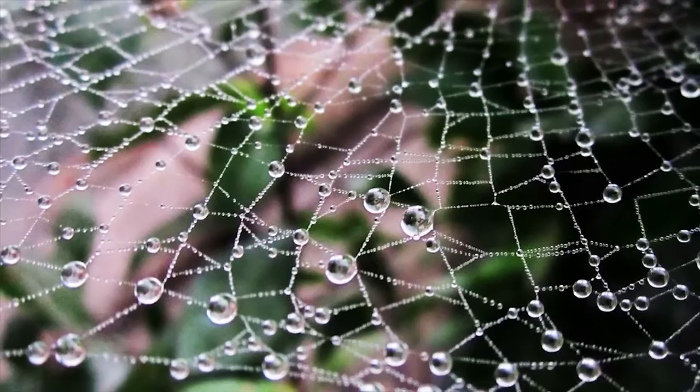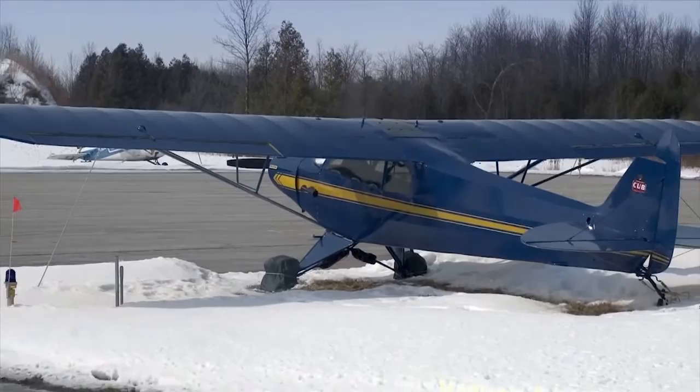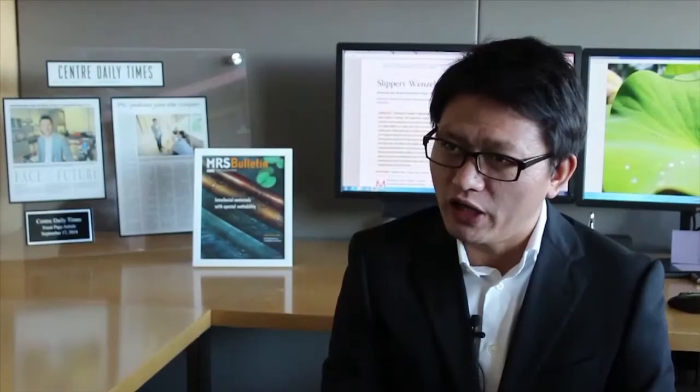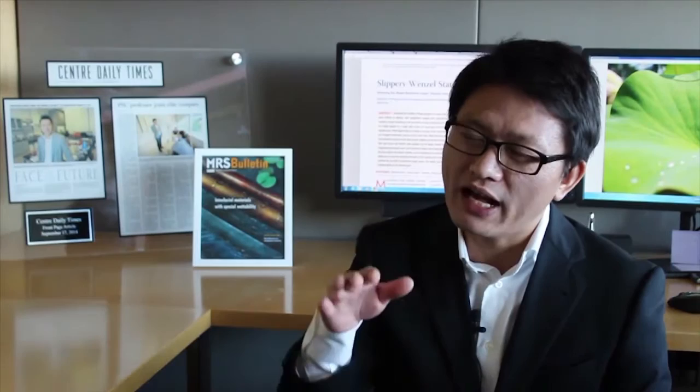Liquid droplets on rough surfaces are typically in either Cassie or Wenzel state. In the Cassie state, the droplets are floating on a layer of air. And in the Wenzel state, the droplets are in full contact with the surface textures.